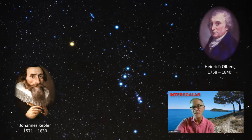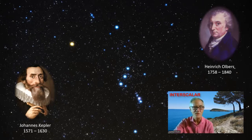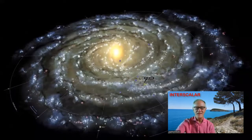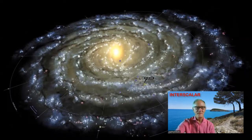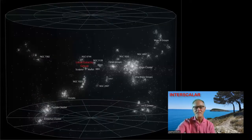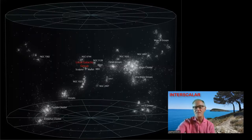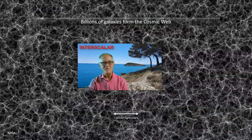Benoit Mandelbrot offered an explanation. Indeed, there are billions of stars in the galaxy, but the night sky is dark because of the fractal distribution of the stars. In fact, our galaxy seems to be a fractal formation. Fractal is also the distribution of galaxies and clusters of galaxies in the observable universe. Clusters of galaxies form the cosmic network, which is fractal and appears to be a tissue very similar to the neural tissue of our brain.